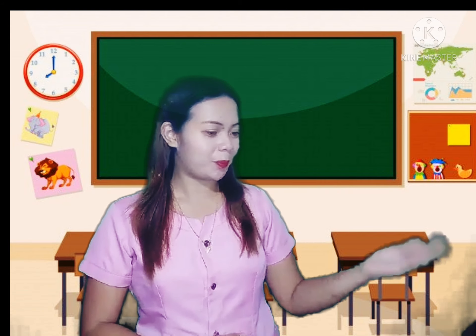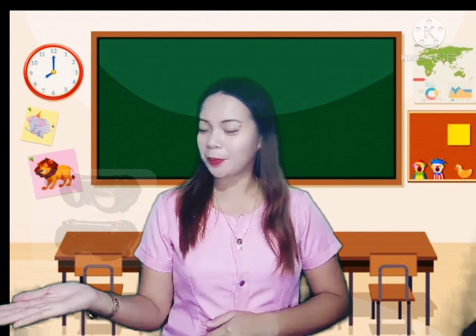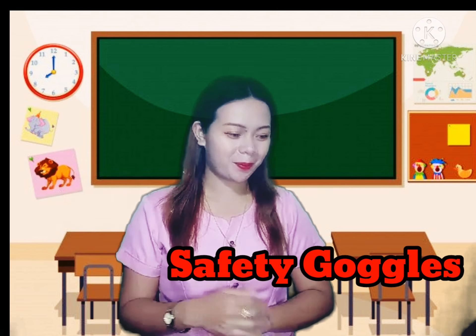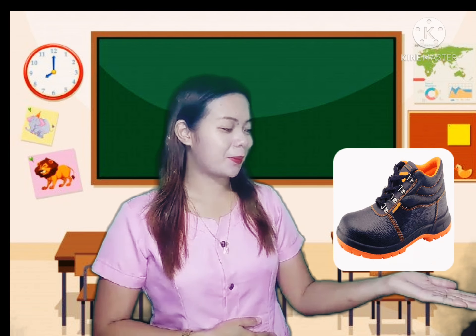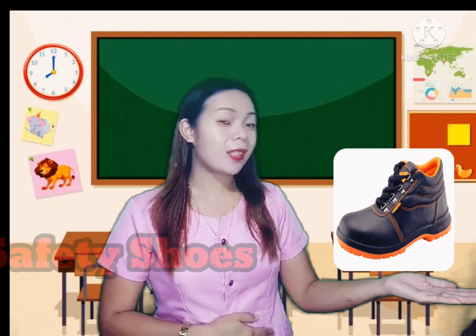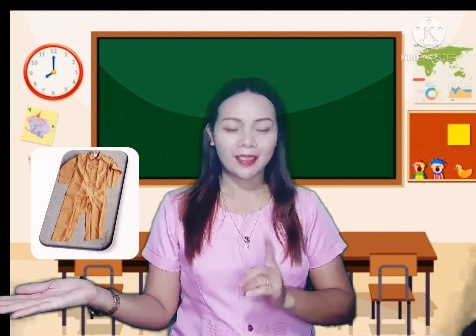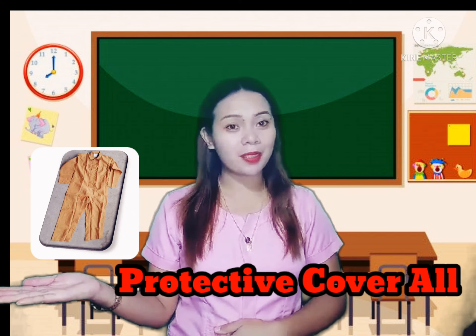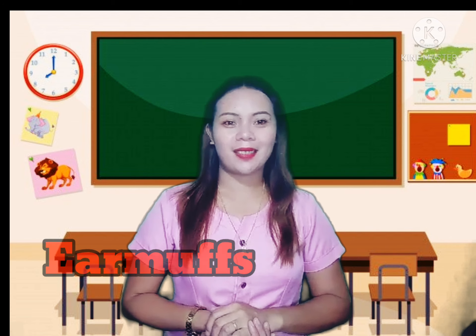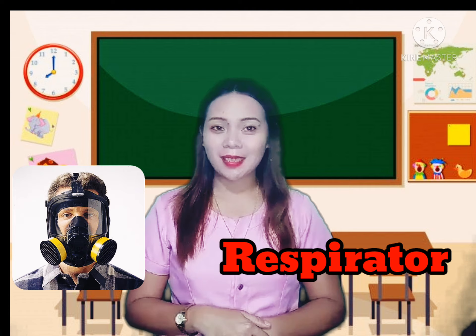Next one — excellent — face shield. How about this? You got it correct, these are safety goggles. How about this? Perfect — safety shoes. Another one — yes, you are correct, this is a protective cover-all. Next — well done — these are ear muffs. And the last one — very good — this is a respirator.